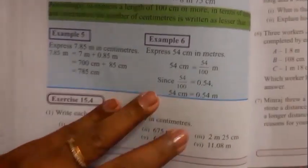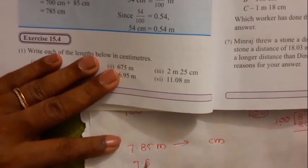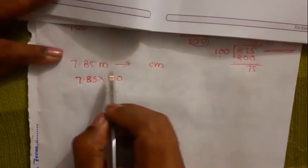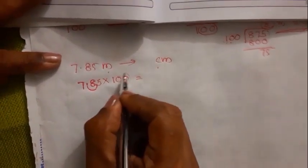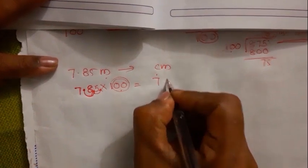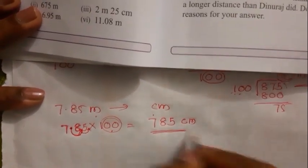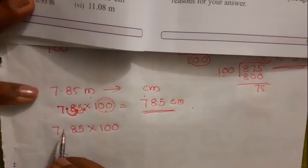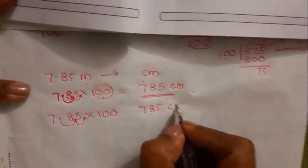Example 5: 7.85 meters — write in centimeters. You multiply by 100, because 1 meter has 100 centimeters. You move the decimal point two places to the right — why? Because you multiply by 100, which has two zeros. So 7.85 becomes 785 centimeters.